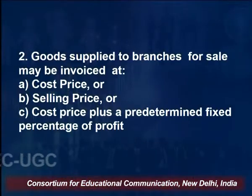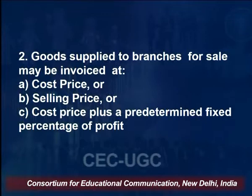The features of dependent branches are: they sell only those goods which are supplied by the head office and are normally not allowed to make purchases in the local market. Goods supplied to the branches for sale may be invoiced at cost price, selling price, or cost price plus a predetermined fixed percentage of profit.